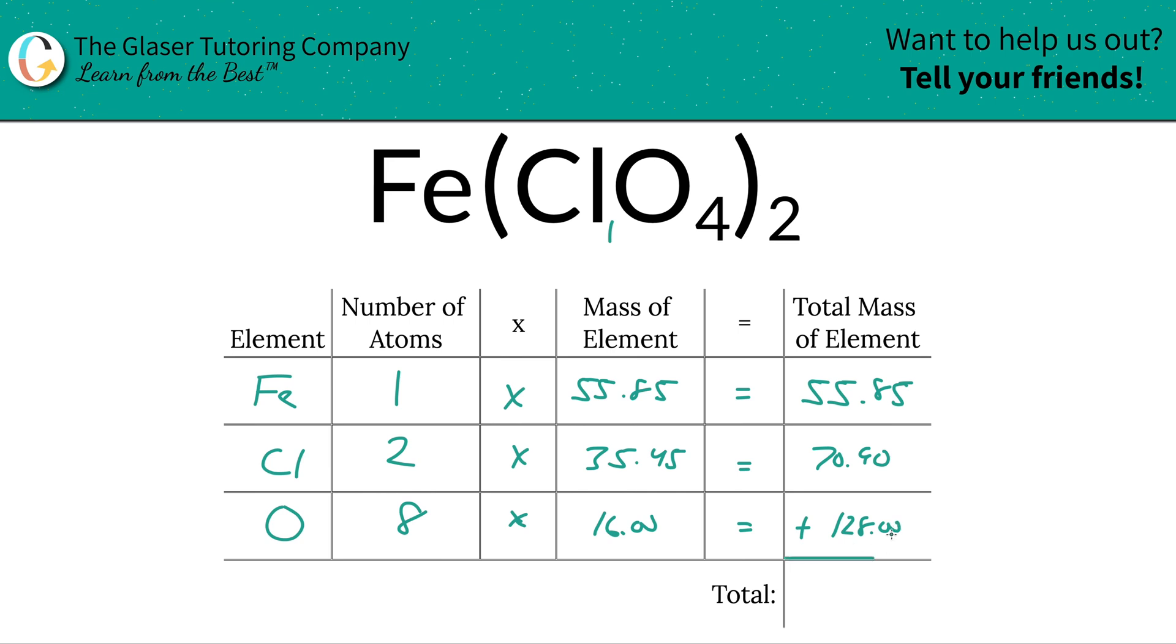And then we're simply going to add these together. We're going to add these values together, the column, to find now the total mass of the entire compound. So this works out to be 254.75. And since we're solving for molar mass, the units here are in terms of grams per mole.